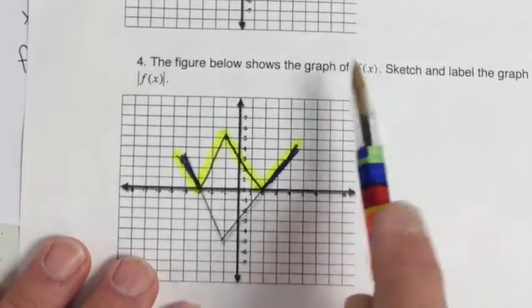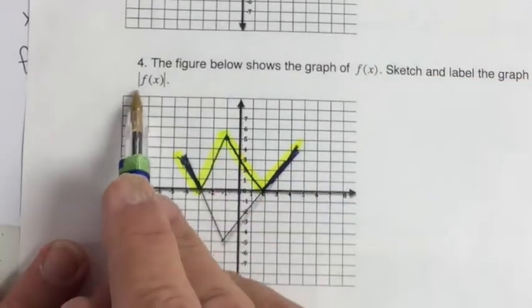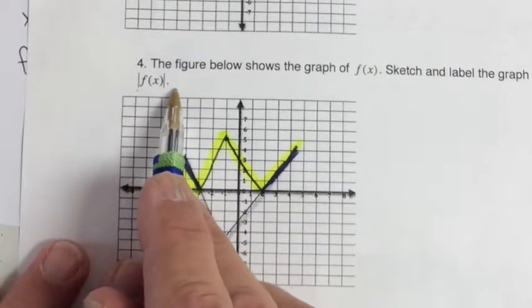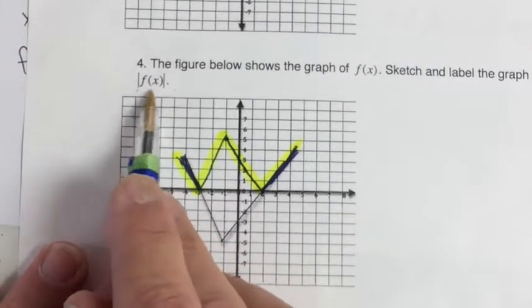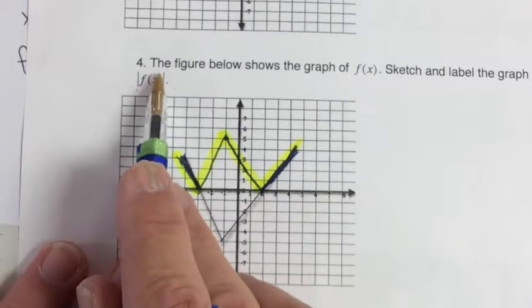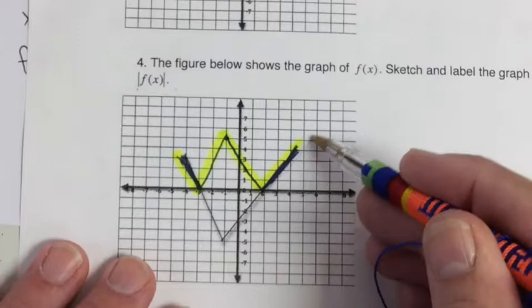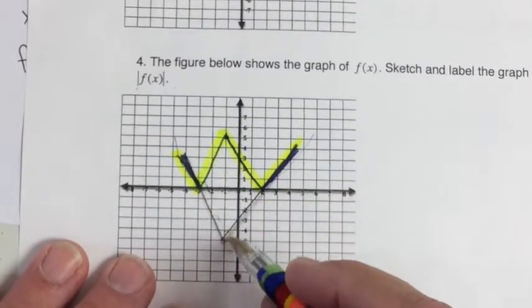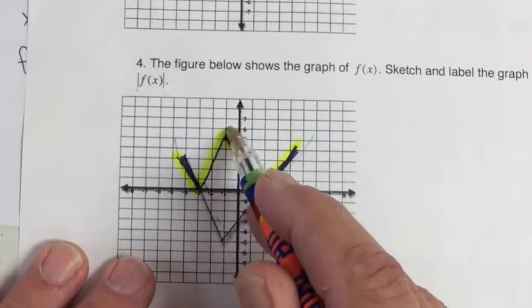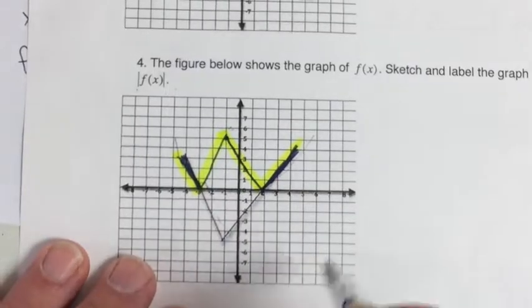This is the figure below here. We've got the graph of f of x. That was the original graph here. And it says to take the graph of the absolute value of f of x. And then we're talking about the y values. All of the y values are going to be positive. If the y values were already positive, they're going to stay positive. If they were negative, they're going to become the absolute value of what they were, or a reflection across the x-axis.